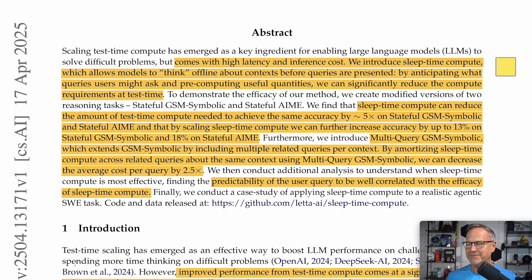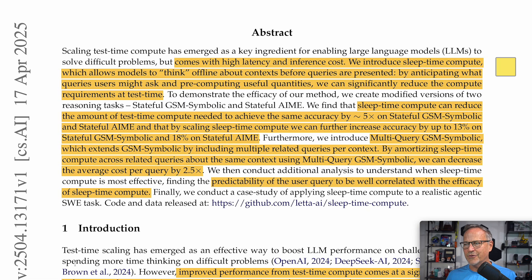We introduced sleep time compute, which allows models to 'think offline about contexts before queries are presented by anticipating what users might ask and pre-computing useful quantities.' We can significantly reduce the compute requirements at test time. To demonstrate efficacy, they created modified versions of two reasoning tasks — stateful GSM Symbolic and stateful AIME. They find sleep time compute can reduce test time compute needed to achieve the same accuracy by approximately 5x, and can further increase accuracy by up to 13% on stateful GSM Symbolic and 18% on stateful AIME.